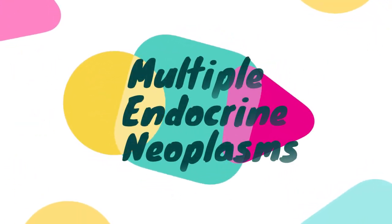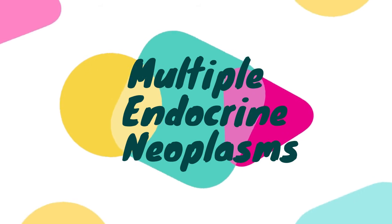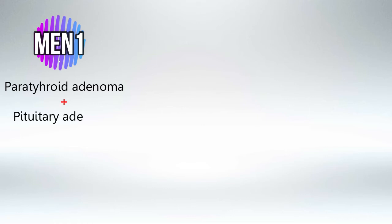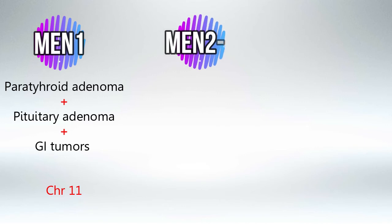Welcome back. In this video I'll be teaching you my way of remembering the multiple endocrine neoplasms and their specific genes and symptoms. MEN1 is associated with parathyroid adenomas, pituitary adenomas, and GI tumors. Remember that MEN1 is associated with chromosome 11 — one for one.